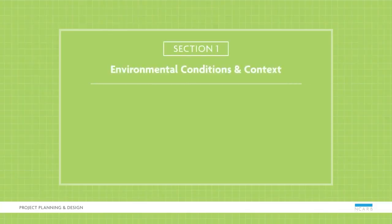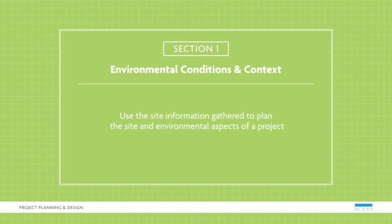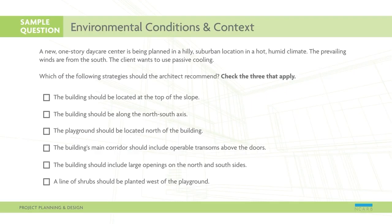In the Environmental Conditions and Context section, you'll use the site information gathered in the programming and analysis phase of a project to plan the site and environmental aspects of a project. Let's look at a sample question. A new one-story daycare center is being planned in a hilly suburban location in a hot, humid climate. The prevailing winds are from the south, and the client wants to use passive cooling. Which of the following strategies should the architect recommend?